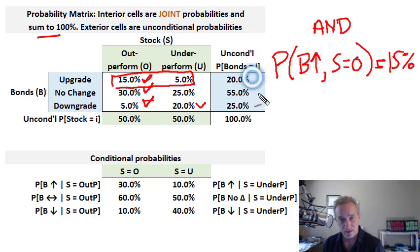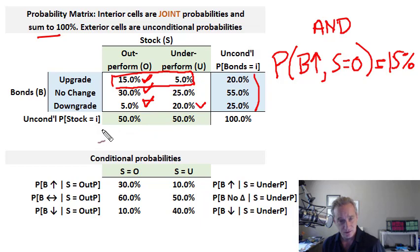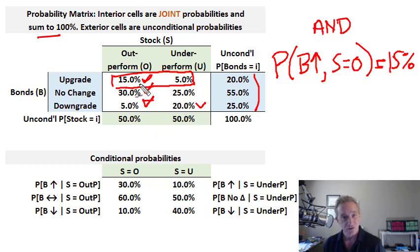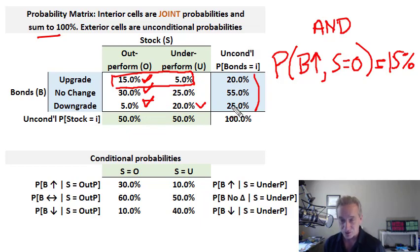For the bond, the unconditional probabilities also must sum to 100%: 20, 55, 25. All probabilities need to sum to 100%, just like the unconditional probabilities for the stock. We have joint probabilities in the inner matrix and unconditional probabilities — also called marginal probabilities — outside here at the margin.